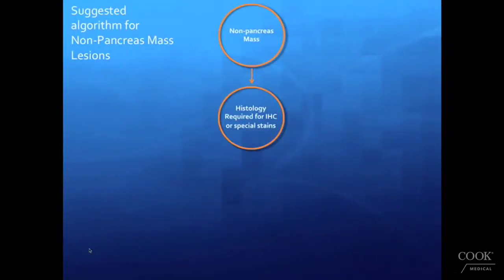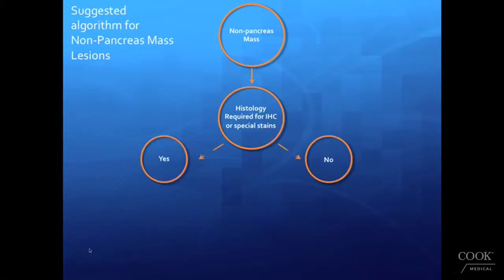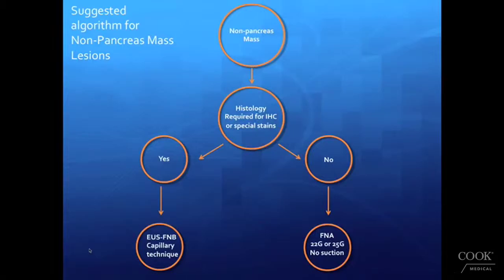Moving to non-pancreatic mass lesions where histology is generally required for immunohistochemistry or special stains, we recommend the use of EUS-guided fine needle biopsy with capillary technique with the ECHOTIP Procore needle. In the rare circumstance where histology may not be required in a non-pancreas lesion, fine needle aspiration is recommended with a 22 gauge or 25 gauge but without suction in this case.